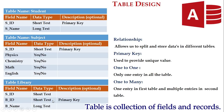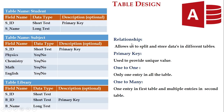Now we can see the similarities between these three tables — SID is common in all three. In the student and subject tables, SID is a primary key, but in the library table SID is not the primary key. A primary key provides a unique value and avoids duplicate values.